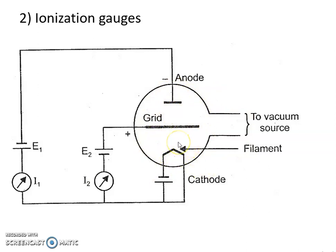This gauge mainly consists of an envelope which is evacuated by the pressure which is to be measured. It contains a heated filament, a positively biased grid, and a negatively biased plate. The grid draws electrons from the heated filament.